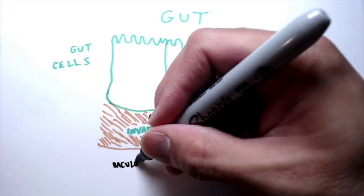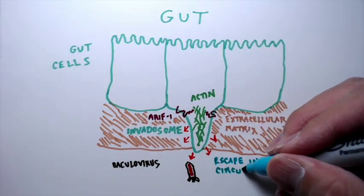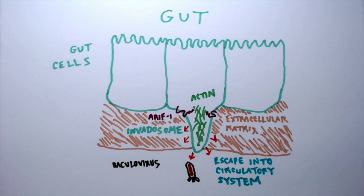This may allow released viruses to spread through barriers that separate different tissues of the caterpillar, and similar events may occur during viral infections of other animals, including humans.